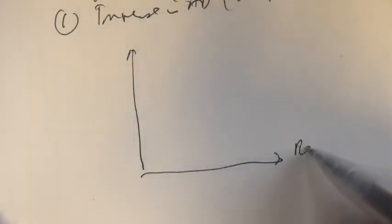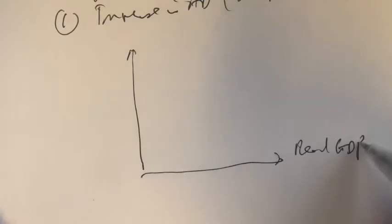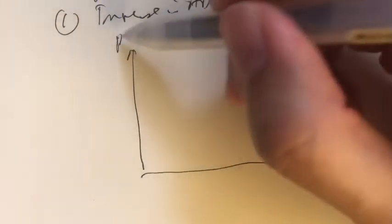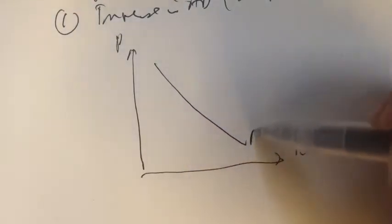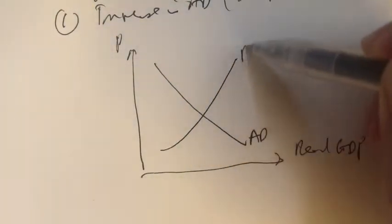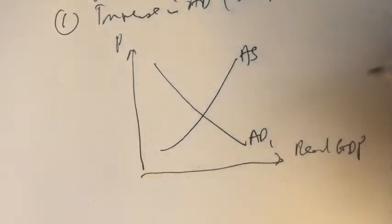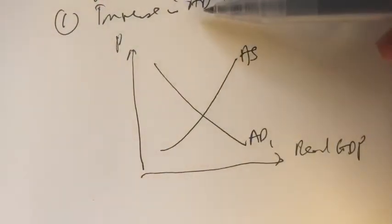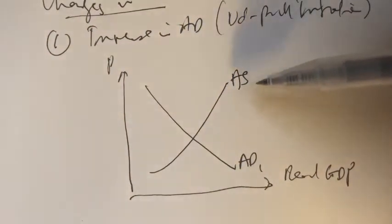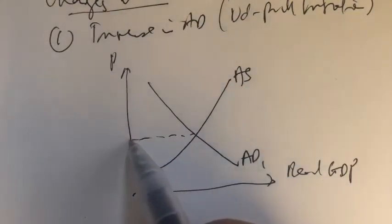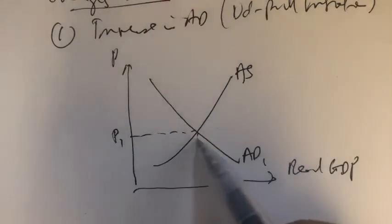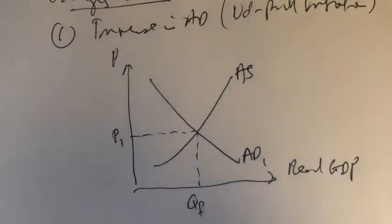Now let's start to sketch our initial condition. This would be our real GDP or output, and here's our price level. Initially we have aggregate demand, AD1, and aggregate supply. Since we're assuming there's a change in aggregate demand and no change in AS — ceteris paribus — we leave it as it is. Here would be the intersection point, so this is P1.